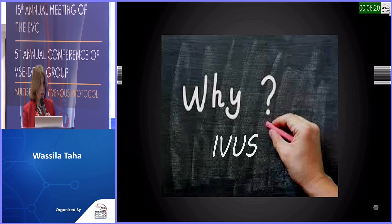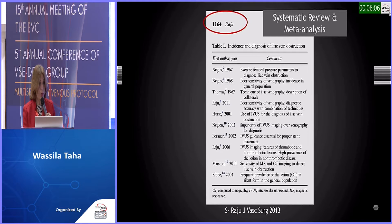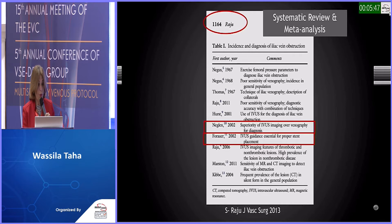So, with such a long list of modalities, why do we do IVUS? The answer comes from Dr. Raju — in one-third of cases, lesions can be missed by conventional venography, while IVUS is very sensitive in depicting such lesions. This systematic review and meta-analysis, the highest level of evidence, by Dr. Raju and Peter Neglén shows the superiority of IVUS imaging over venography for the diagnosis of iliac vein occlusions. IVUS also provides precise and invaluable guidance for proper stent placement.